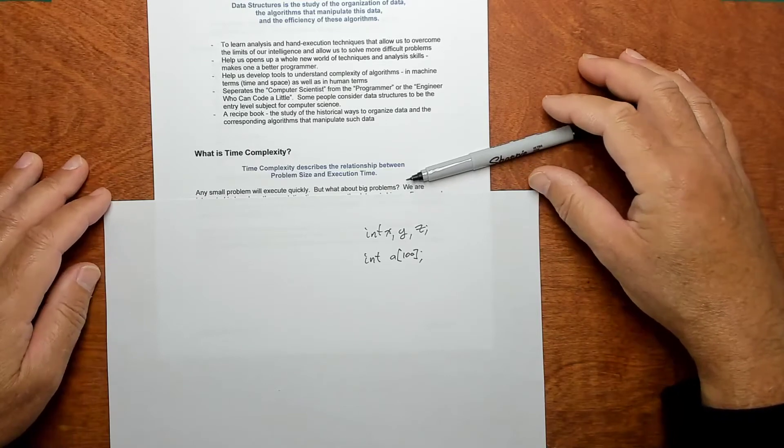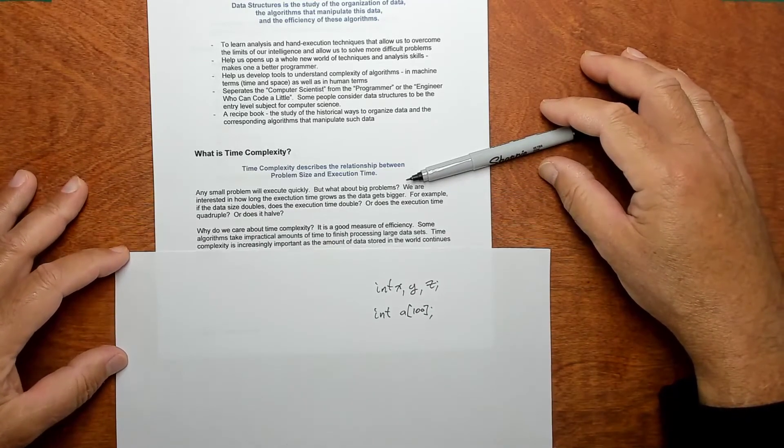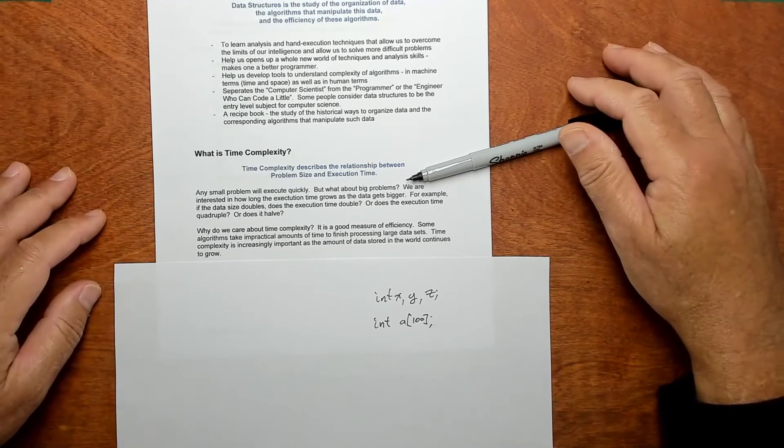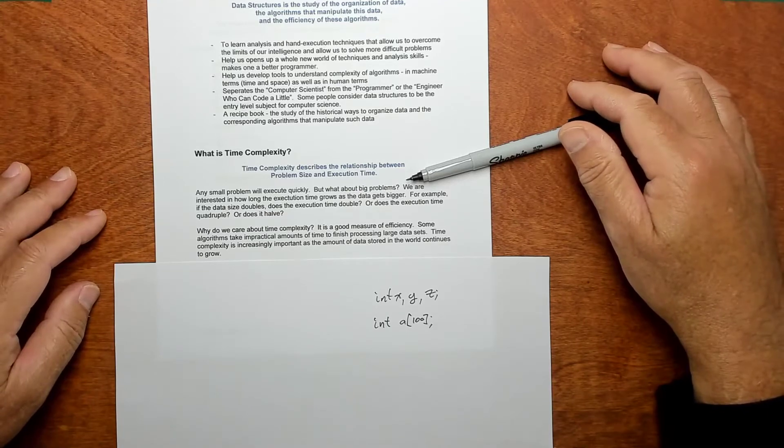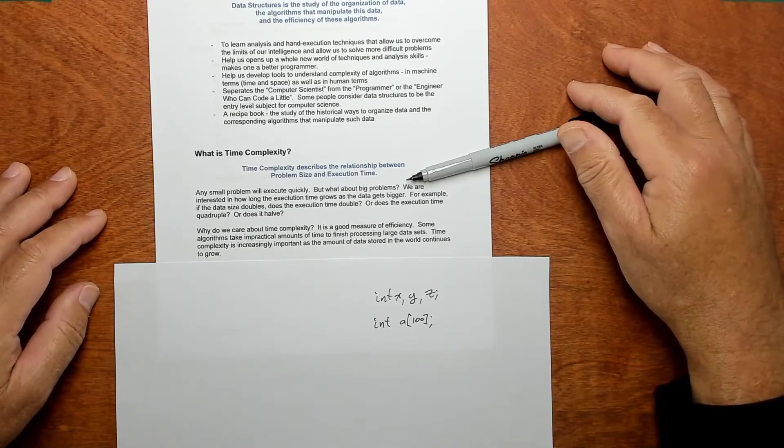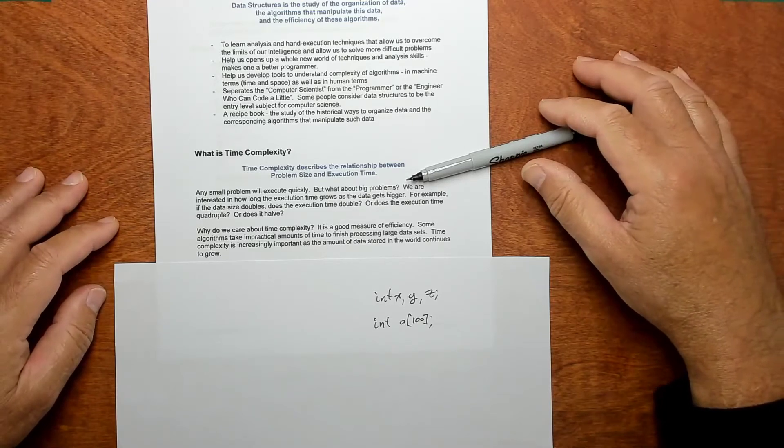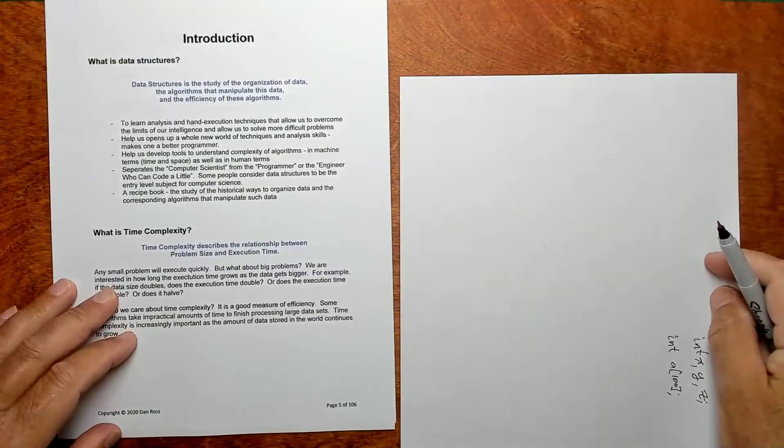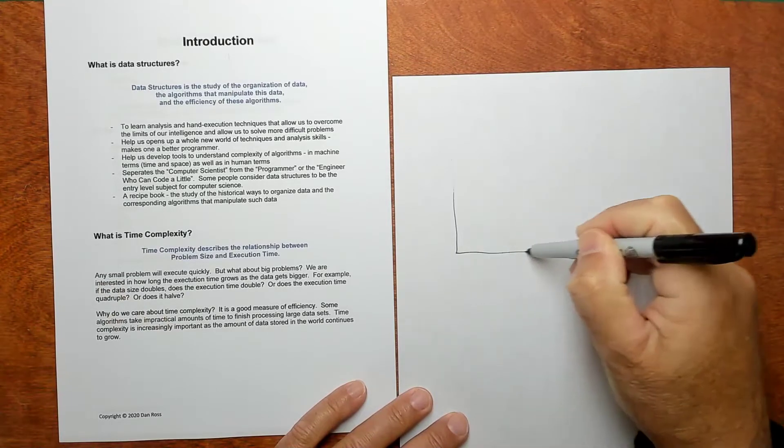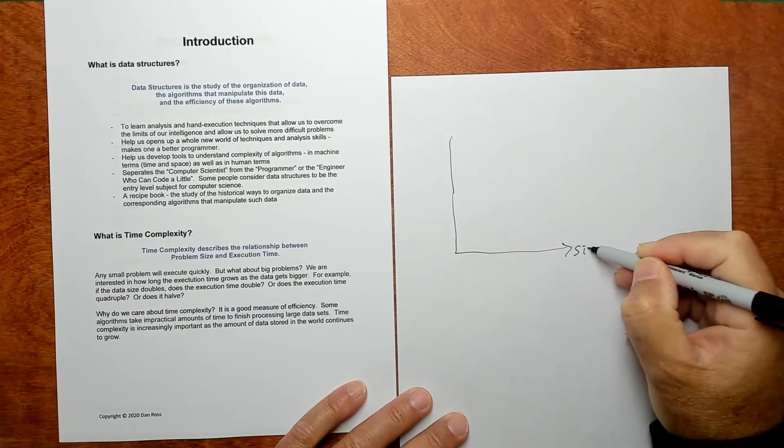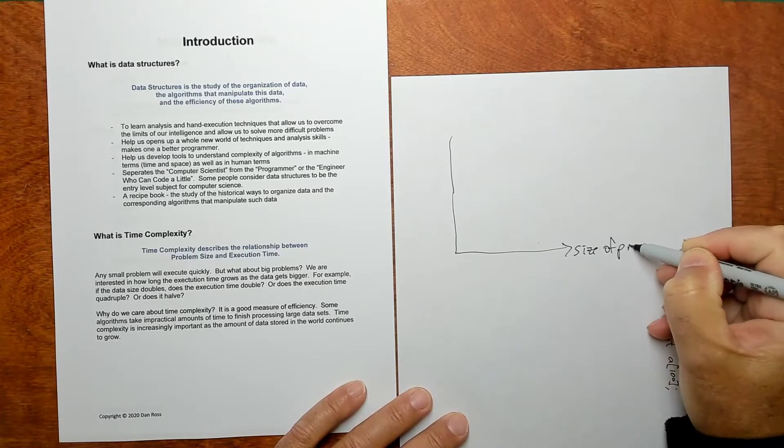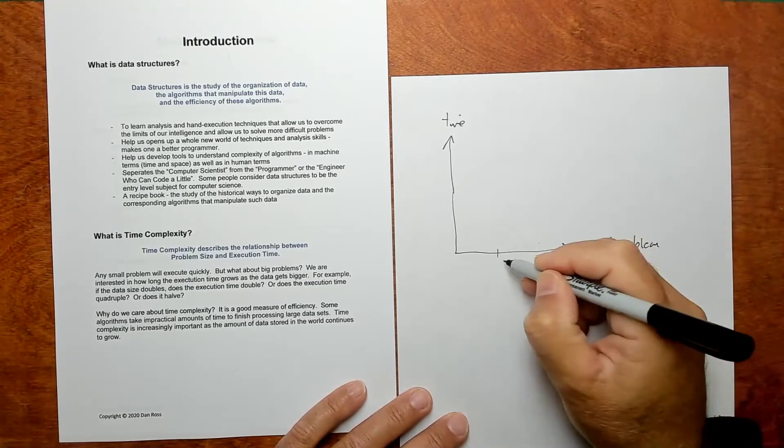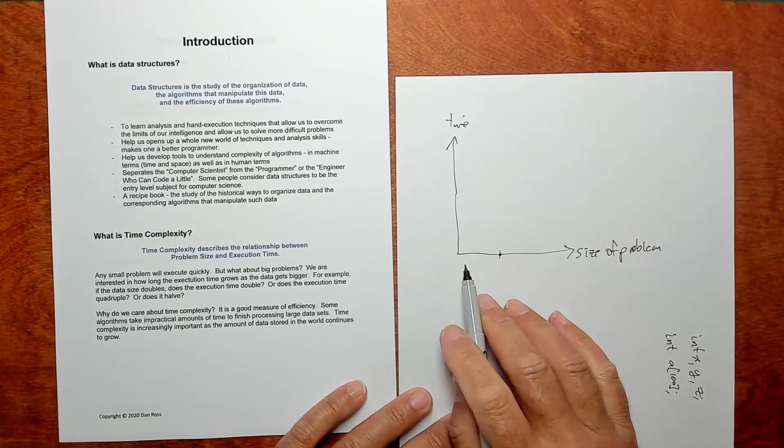There's just huge quantities of data that's being collected. When you go to Walmart and buy a tube of toothpaste, that transaction is put into a database. So there's just millions and billions and trillions of bytes of data growing all the time. Here's the basic idea of time complexity. You could create a graph of two things. You could create the size of the problem and the time that it takes.